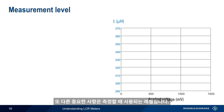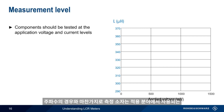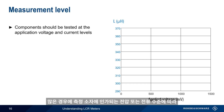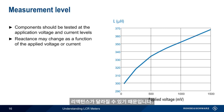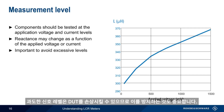Equally important is the level used in making measurements. Just as in the case of frequency, components should be tested at the voltage and/or current levels normally encountered in the intended application. This is because in many cases the reactance of a component may change depending on the level of voltage or current applied to it. It's also important to avoid excessive signal levels, since these can damage or destroy the component under test.